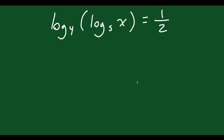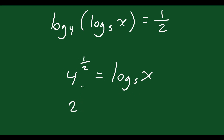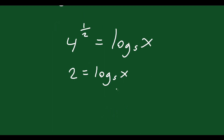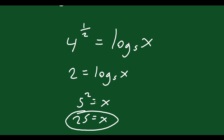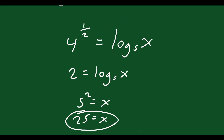Rewrite this as an exponential: 4 to the exponent of 1/2 is equal to log base 5 of x. Simplify 4 to the 1/2 to be 2, since that's the square root of 4. So 2 equals log base 5 of x. Then rewrite again as an exponential: 5 to the 2 equals x. Therefore 25 equals x. All you do is go around the horn twice — that's enough to isolate x.